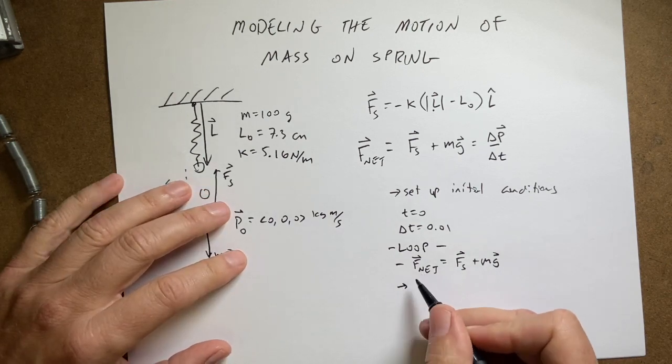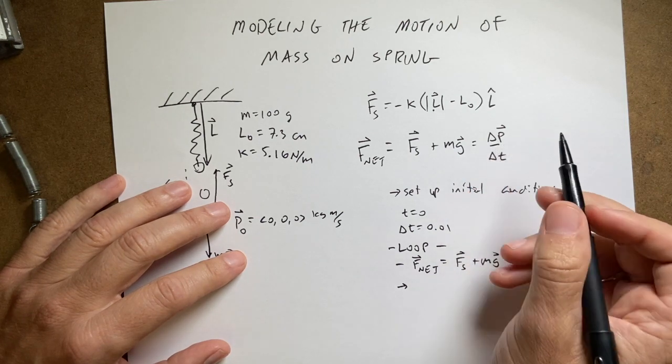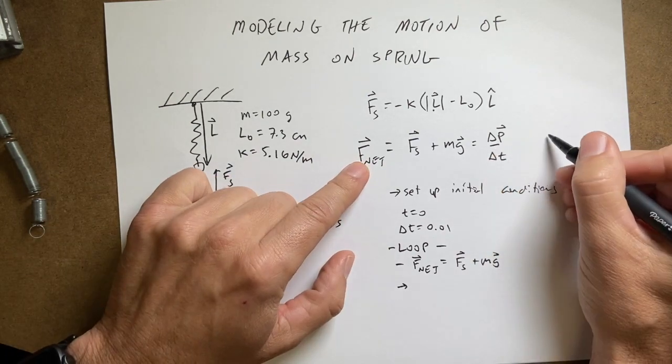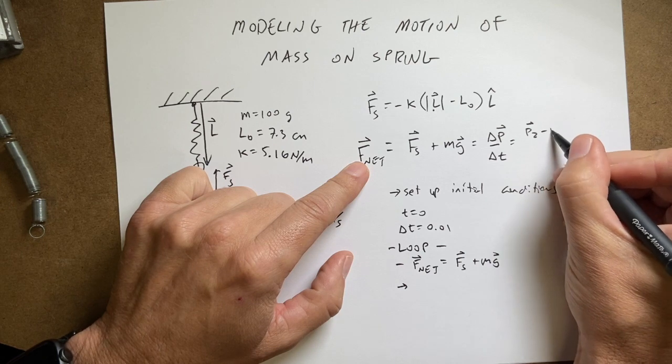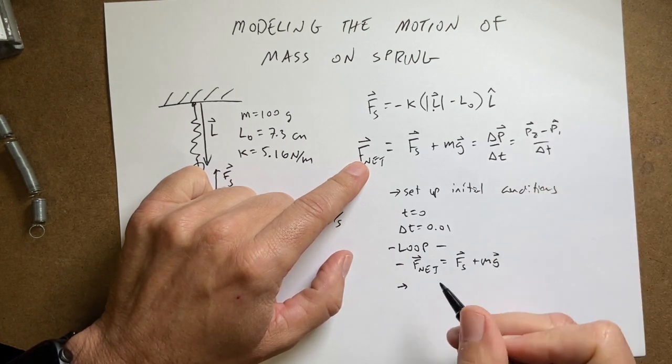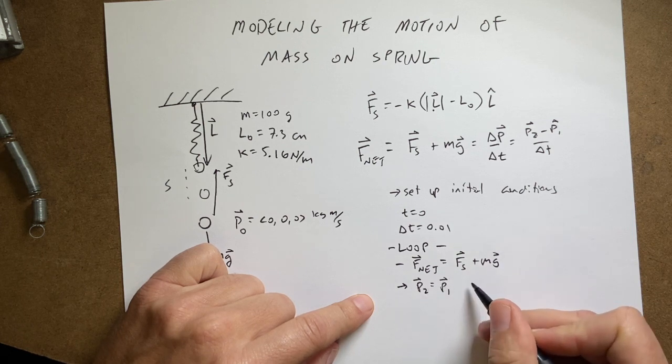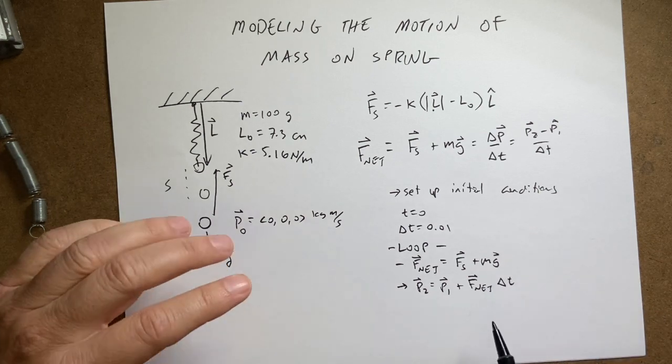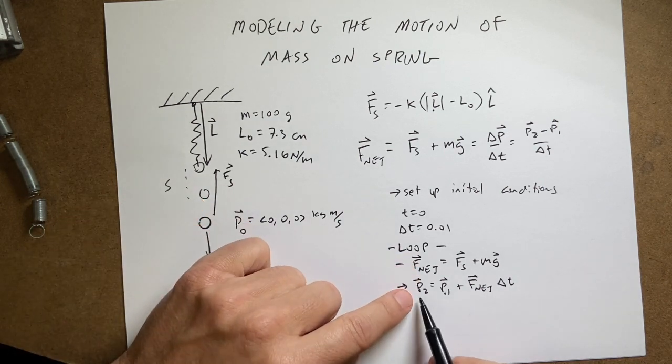Next, I will use this force and this momentum to find the change momentum. I've already talked about the momentum update formula. So if I solve this for P2, this is equal to P2 minus P1 over delta T. And if you solve that for P2, I get P2 equals P1 plus F net delta T. So if I know the momentum and I calculate the force, I can find the new momentum.